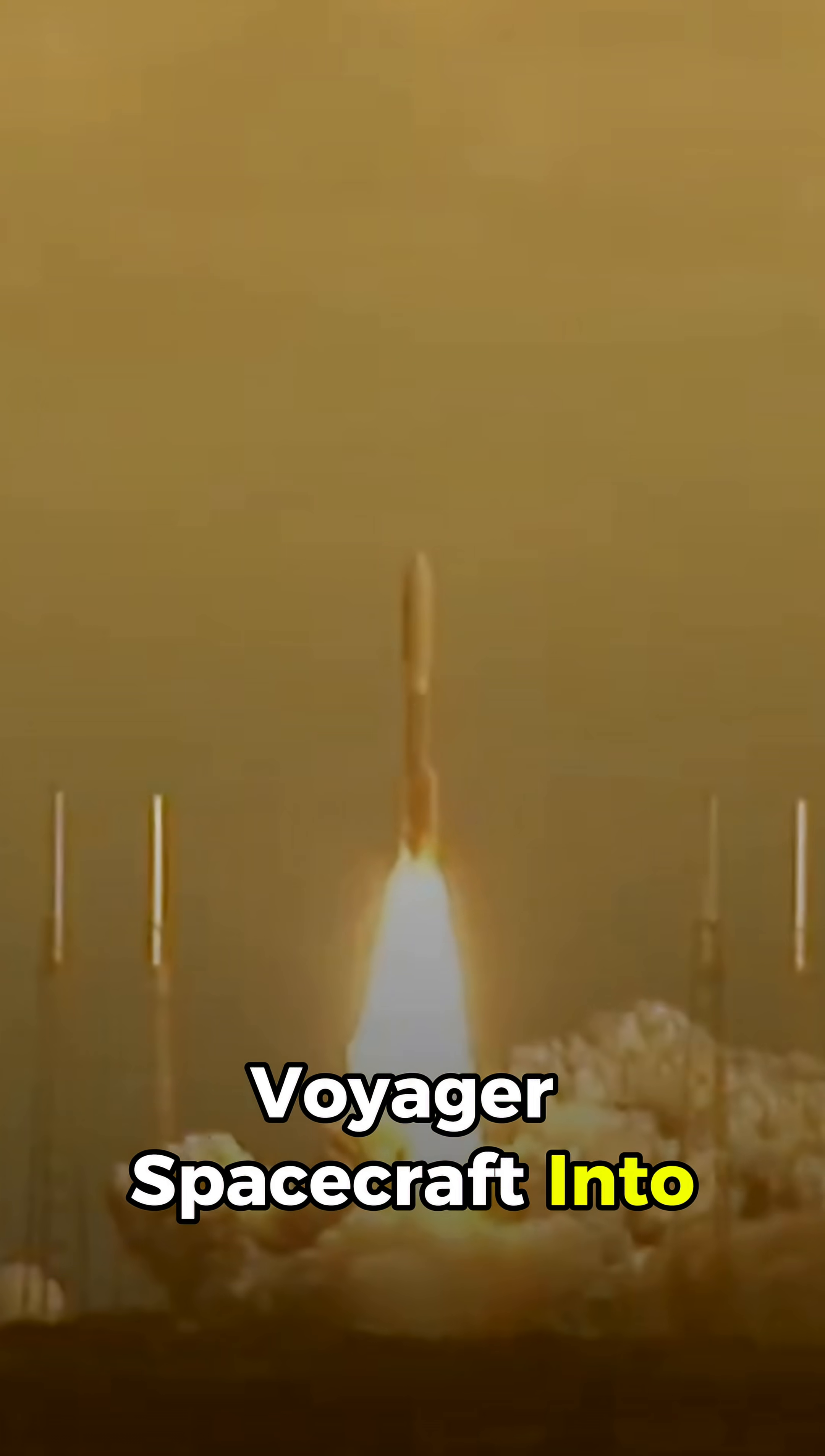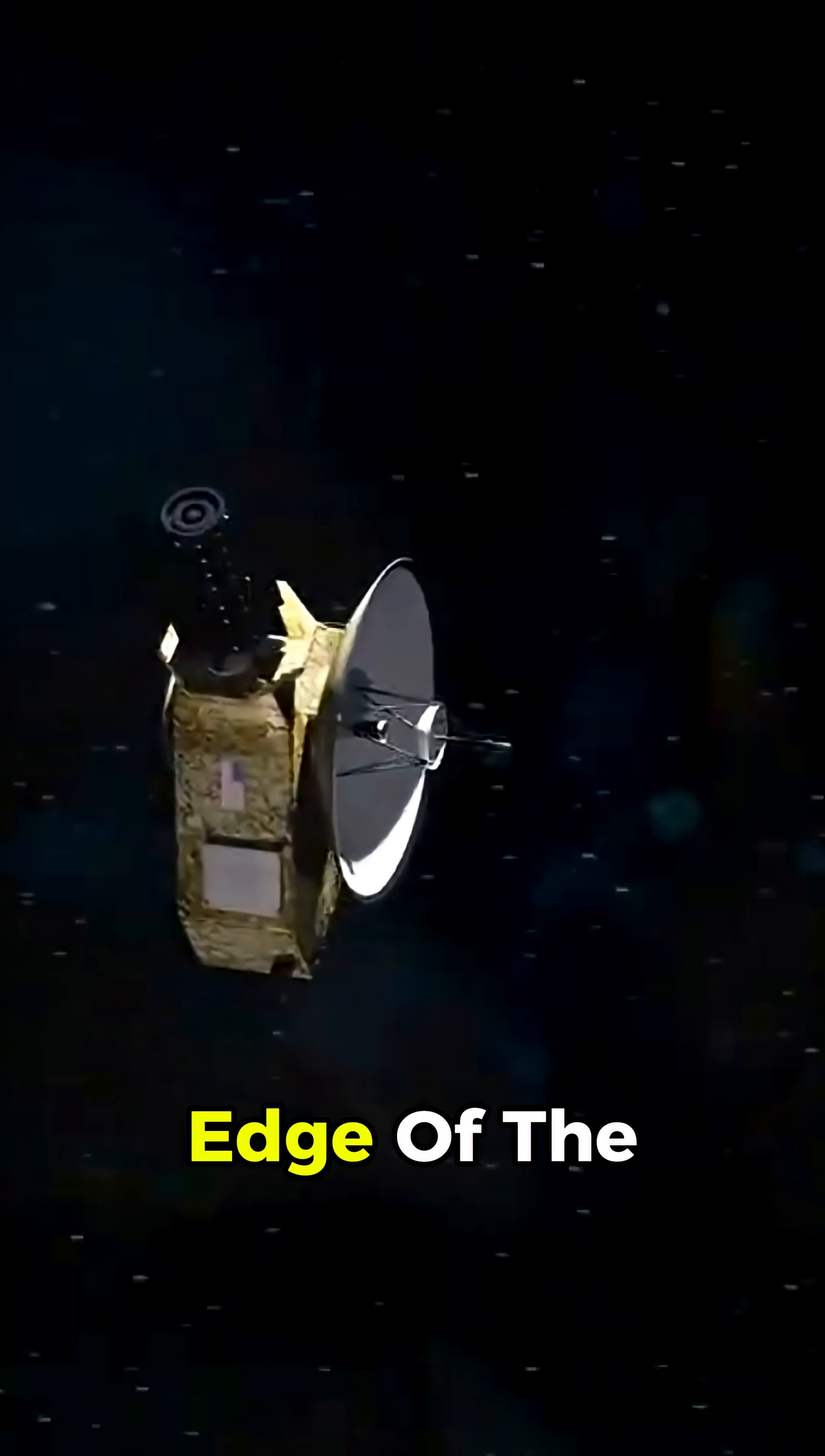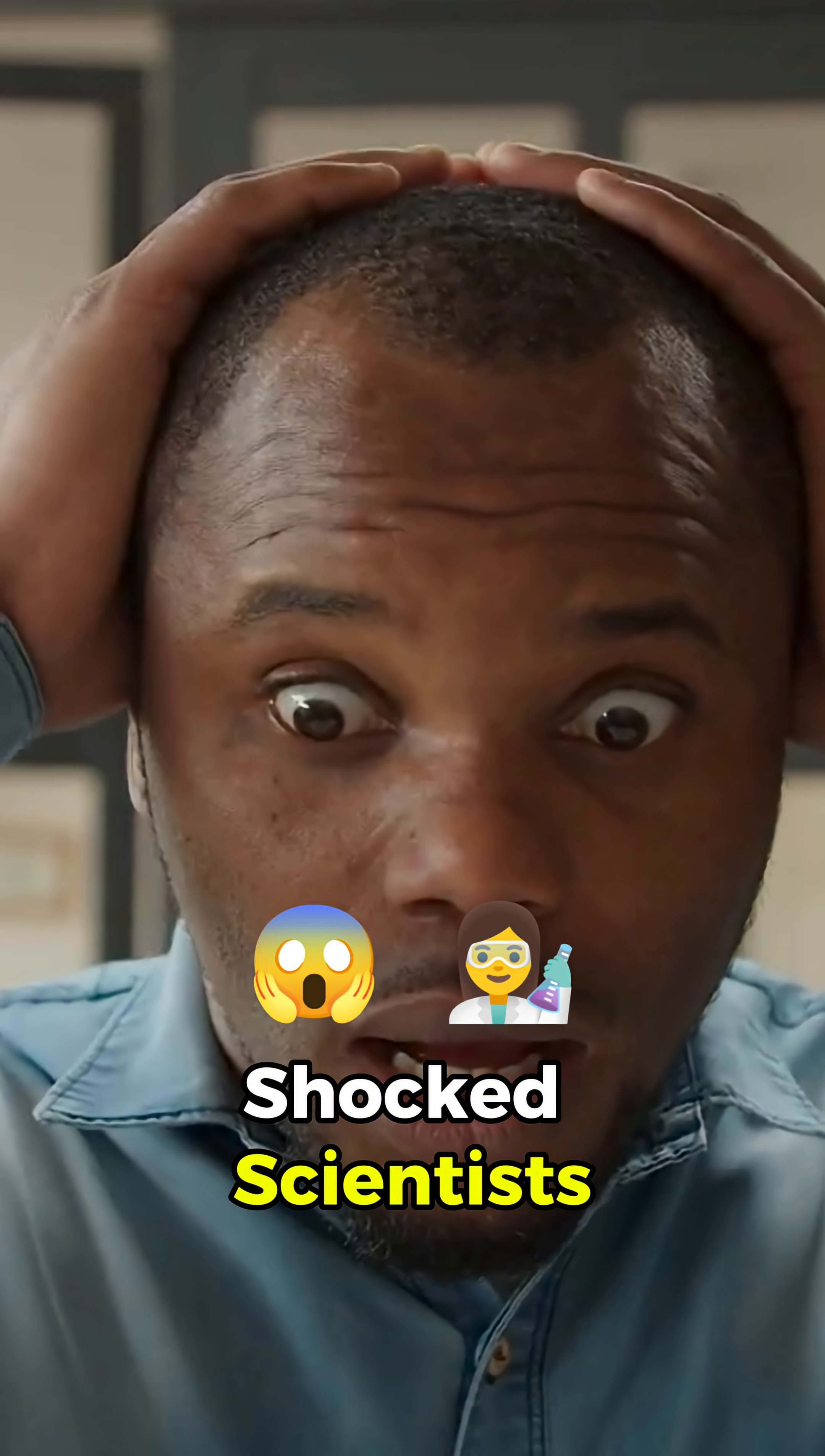NASA sent the Voyager spacecraft into deep space over 40 years ago. And what it discovered at the edge of the solar system shocked scientists.